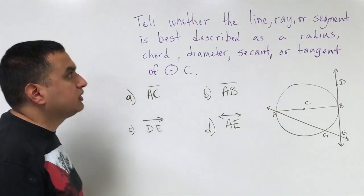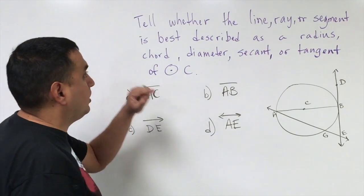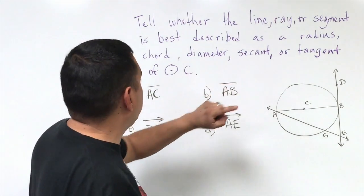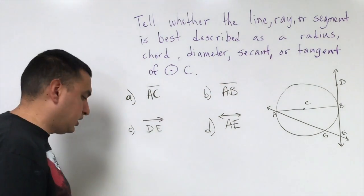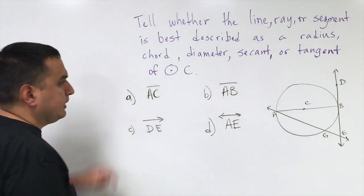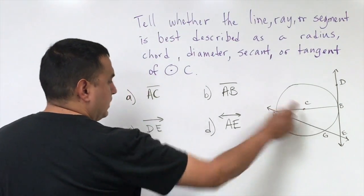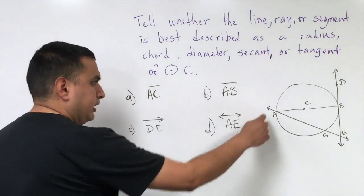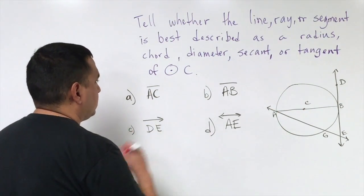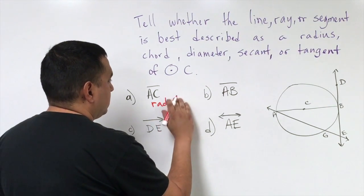This example says to tell whether the line, ray, or segment is best described as radius, chord, diameter, secant, or tangent of circle C. The first one is AC — C is the center and A is on the circle, so we would call that a radius.